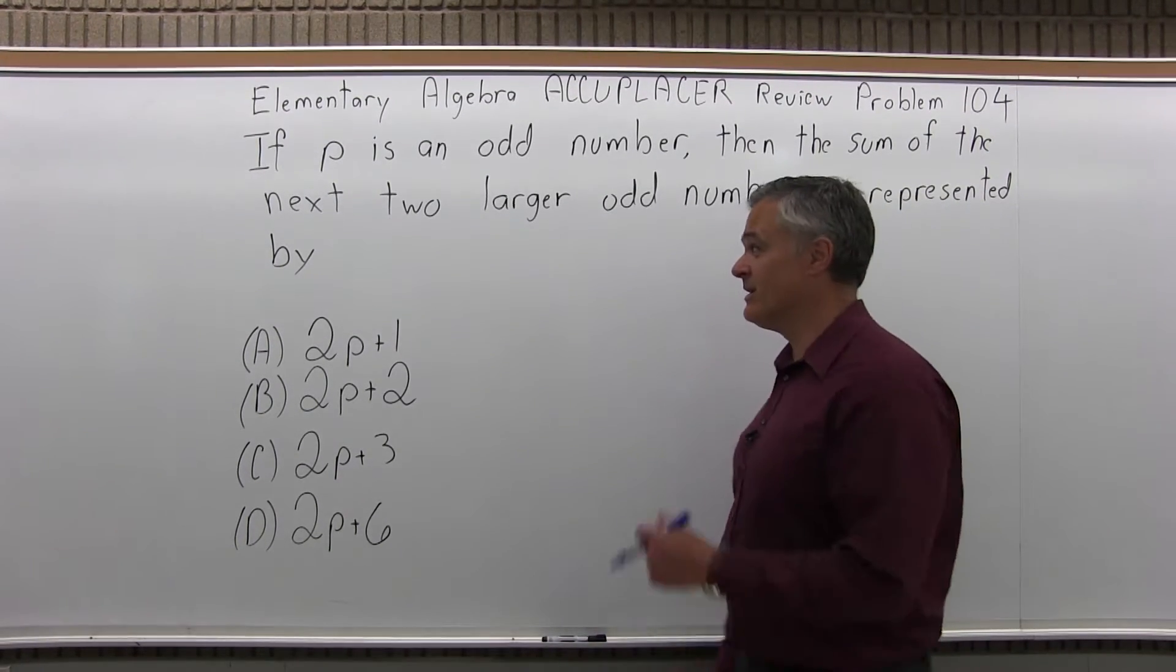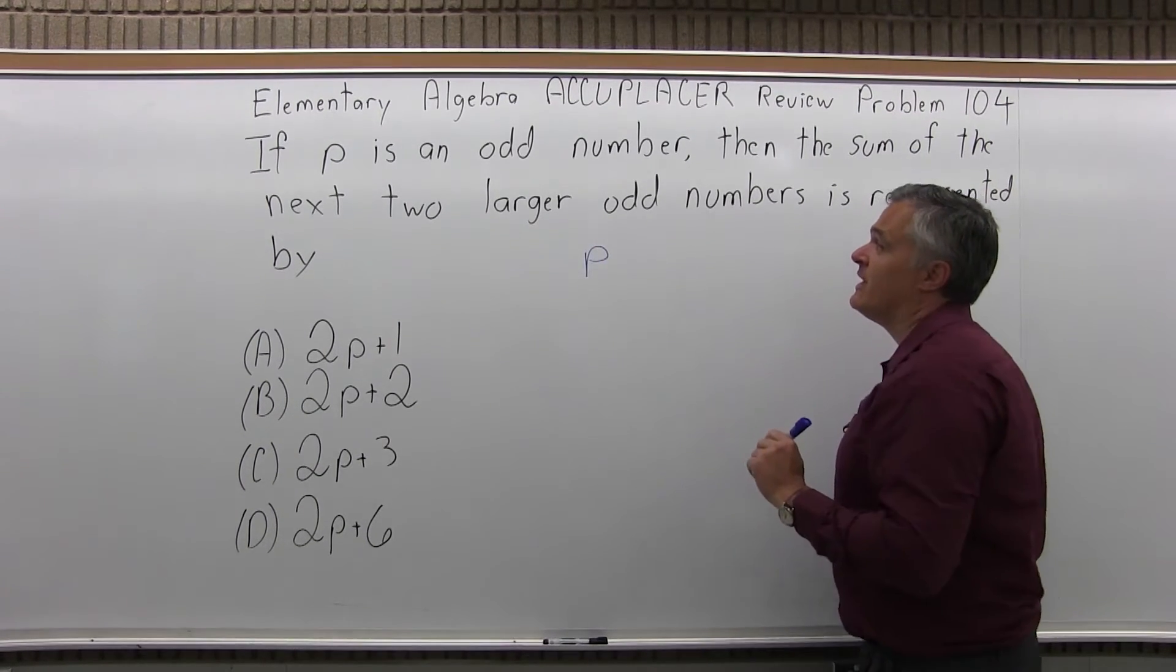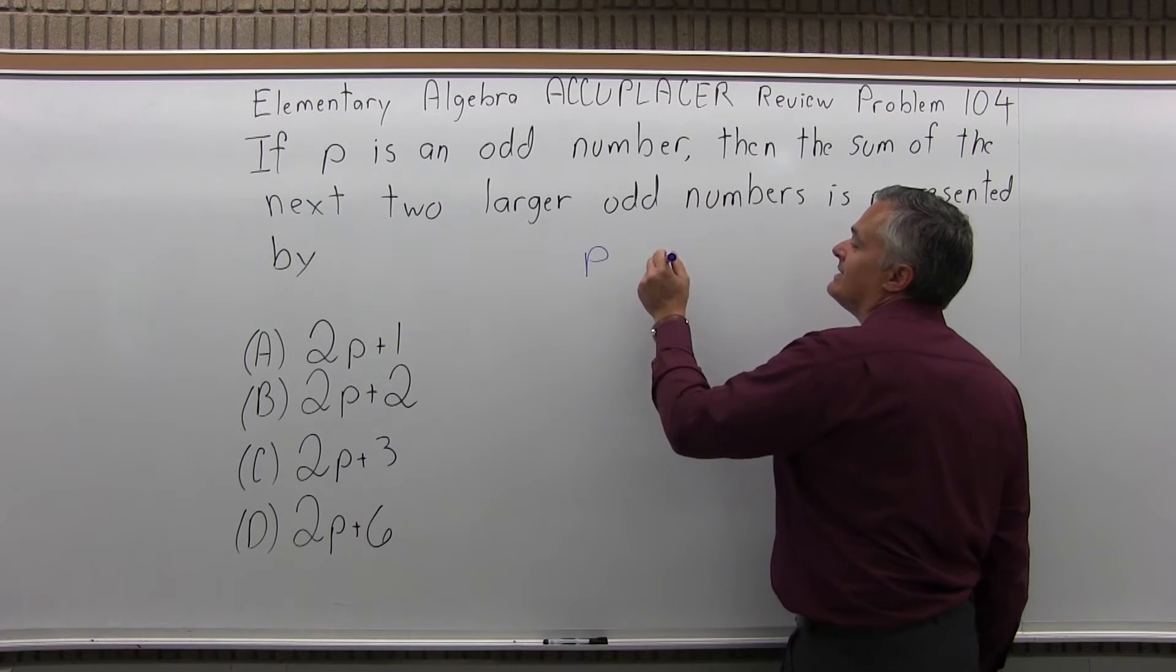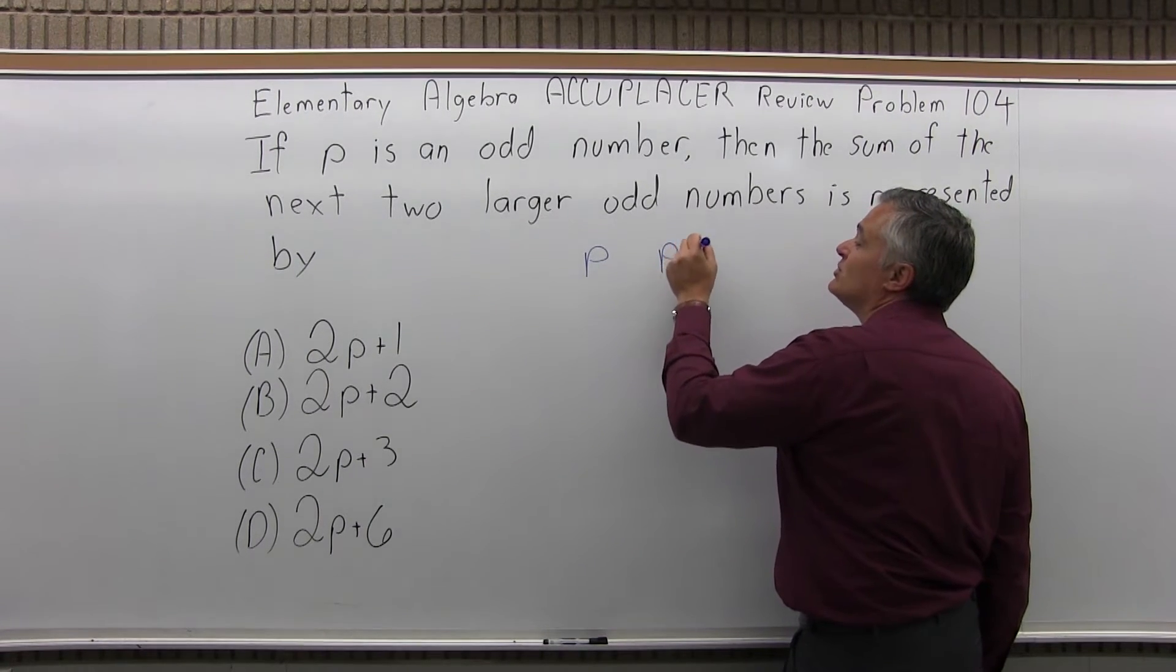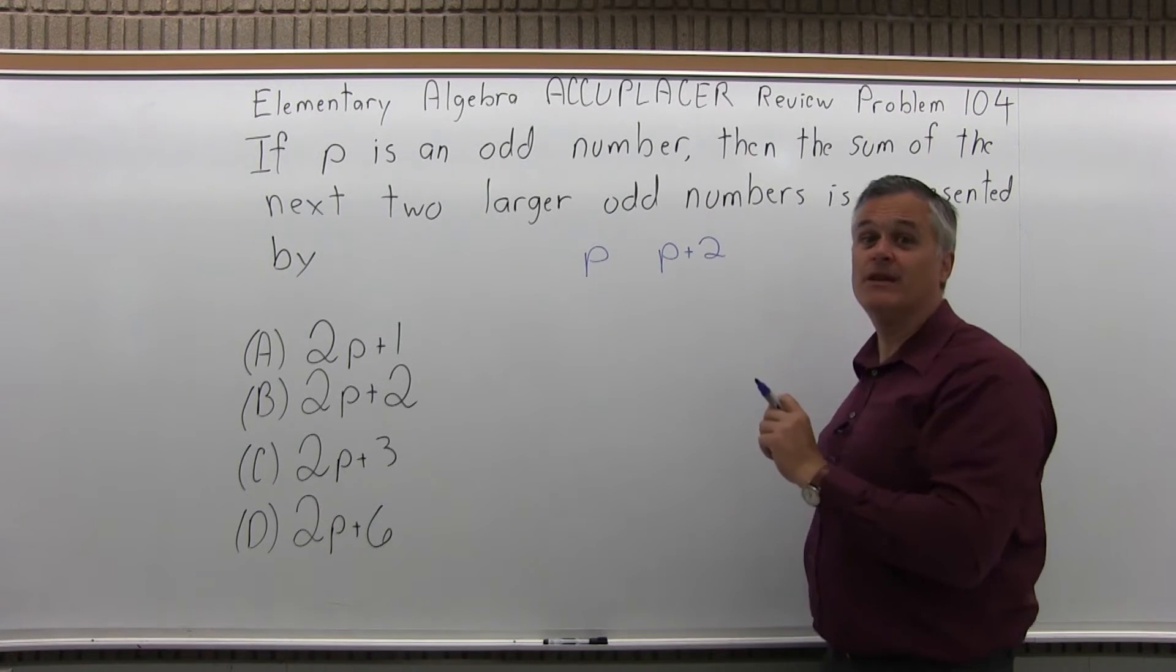This sounds very complicated when you read it. So, P is an odd number. So, here's P. They want the next two larger odd numbers. So, it has to be P plus two for the next odd number. You can't do P plus one because it will go to an even number.